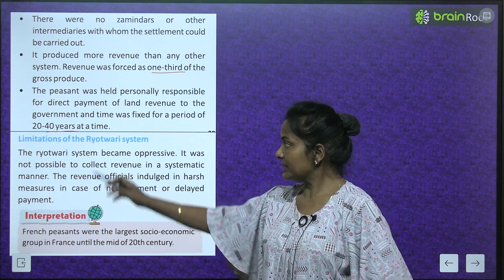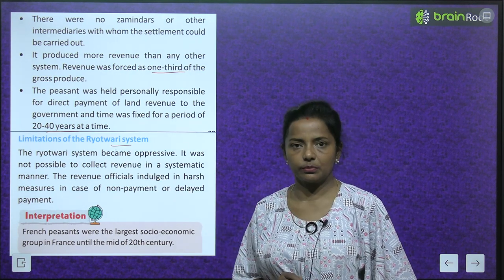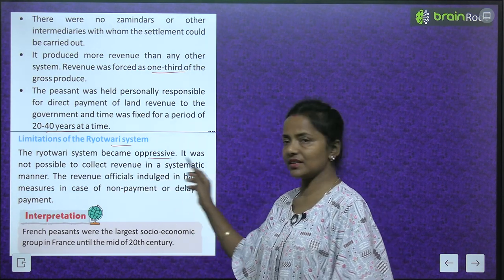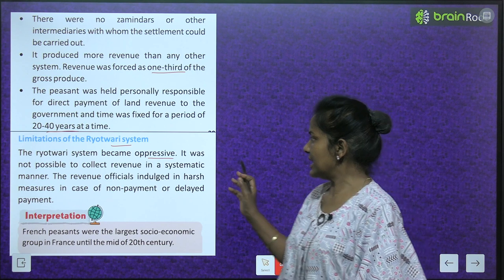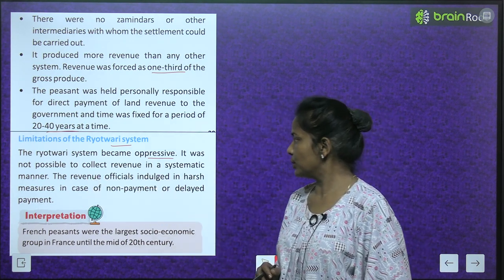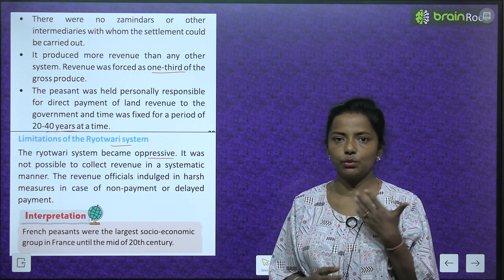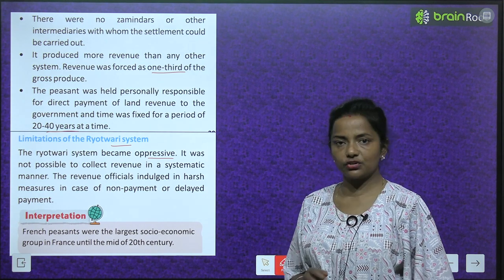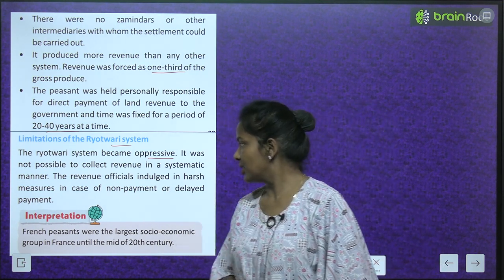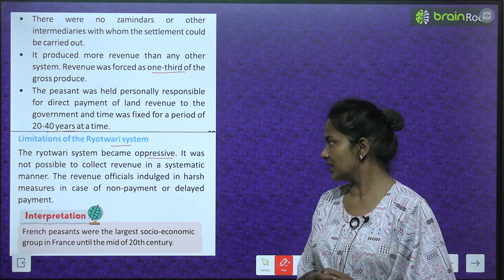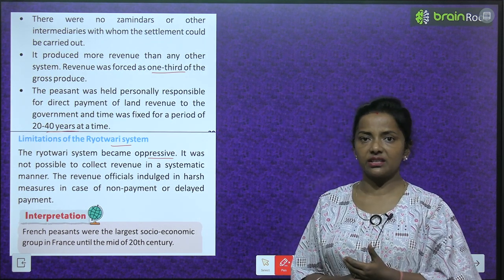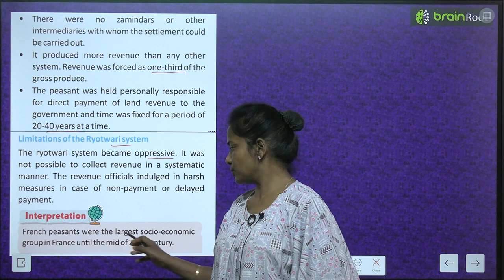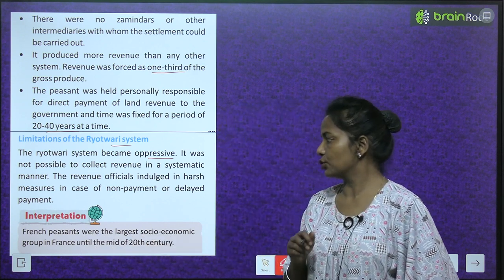The Raitwari System had its own limitations. It became oppressive and it was not possible to collect revenue in a systematic manner. Revenue officials indulged in harsh measures in cases of non-payment or delayed payment, making life very difficult for the peasants.